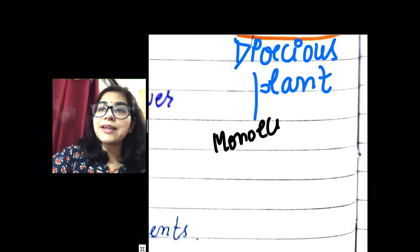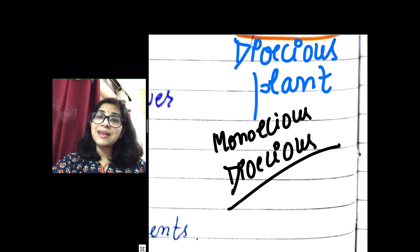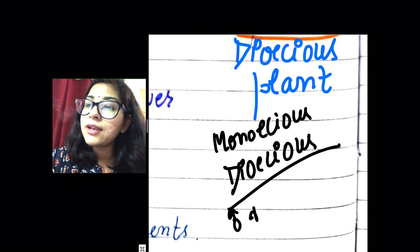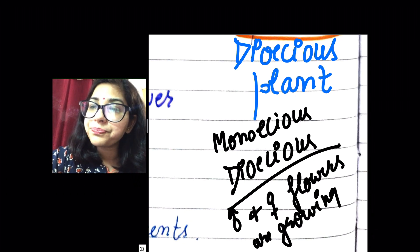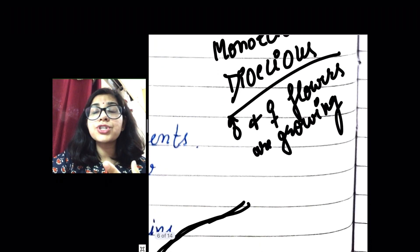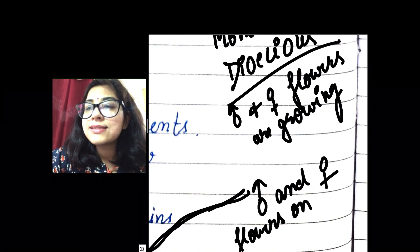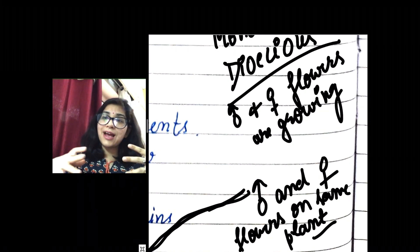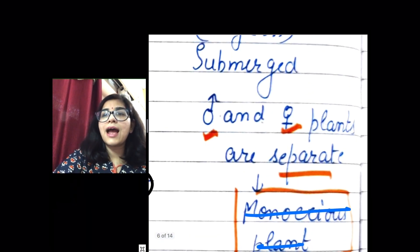One important fact asked in NEET: Vallisneria is a dioecious plant. These terms must be clear — dioecious means male and female parts are separate, growing on separate plants. Monoecious means male and female flowers are on the same plant. For animals we use unisexual and bisexual. Vallisneria is dioecious — male and female plants are separate.